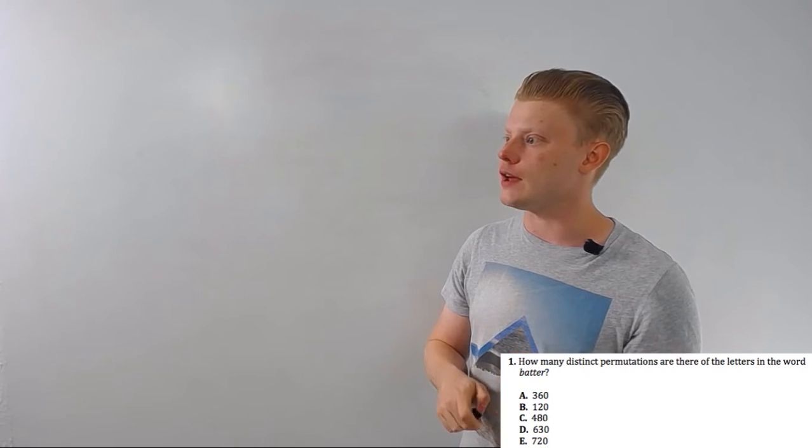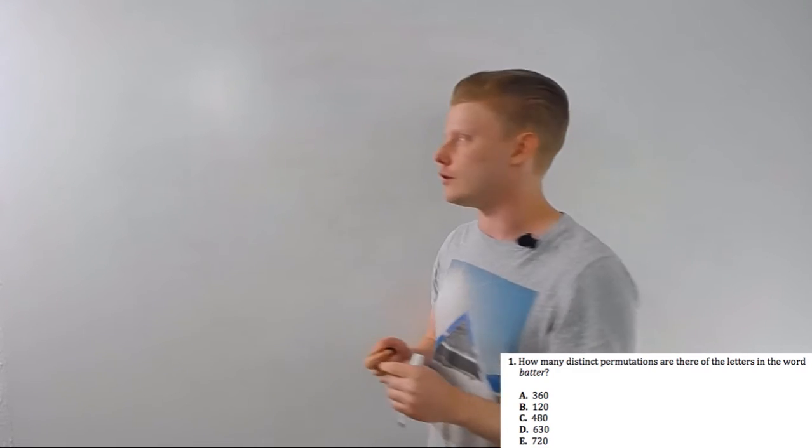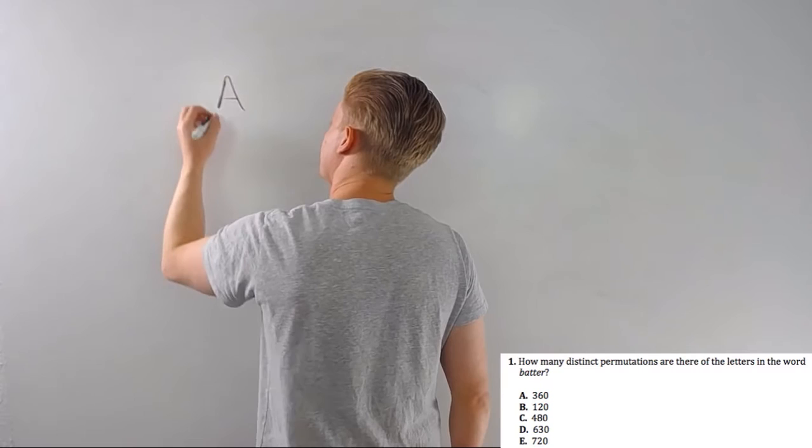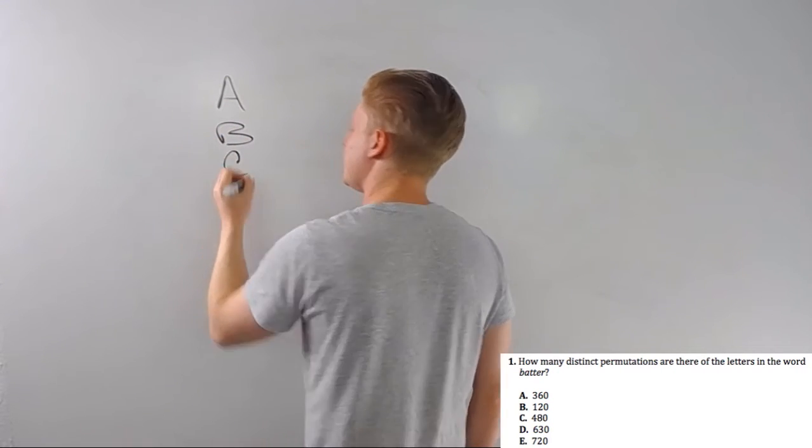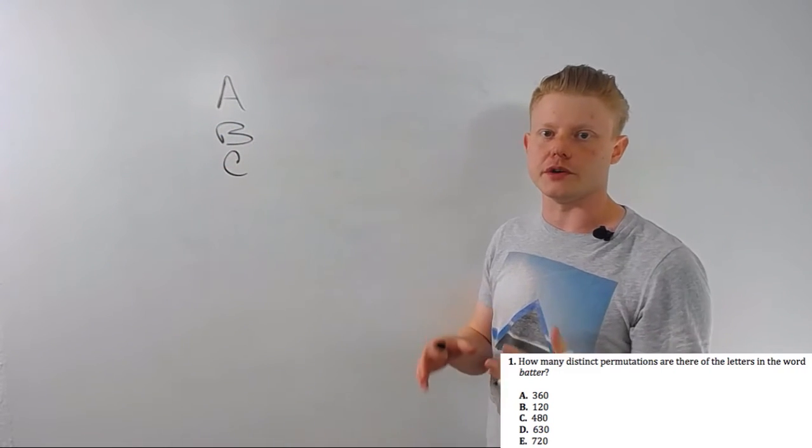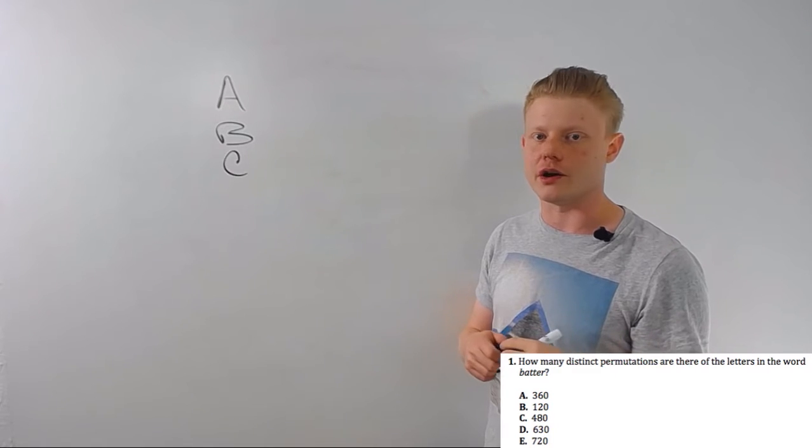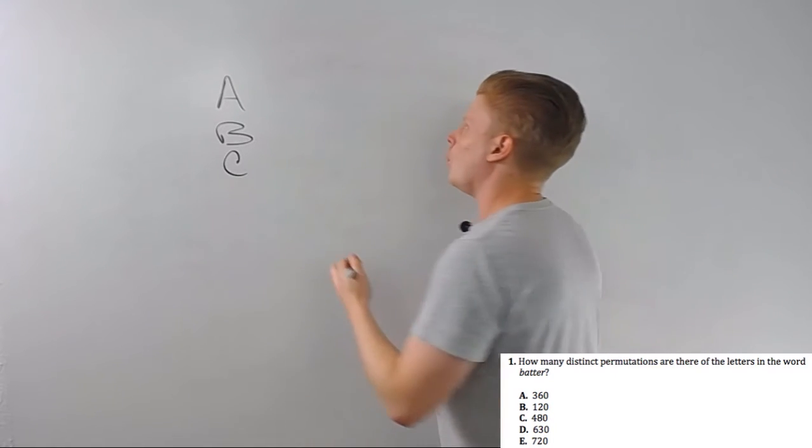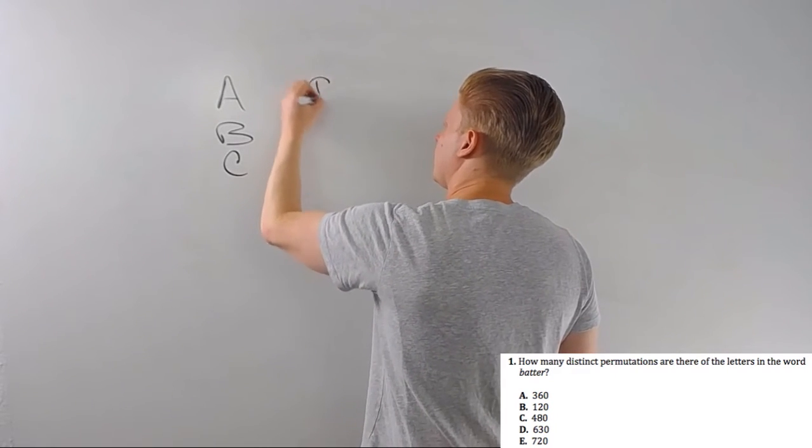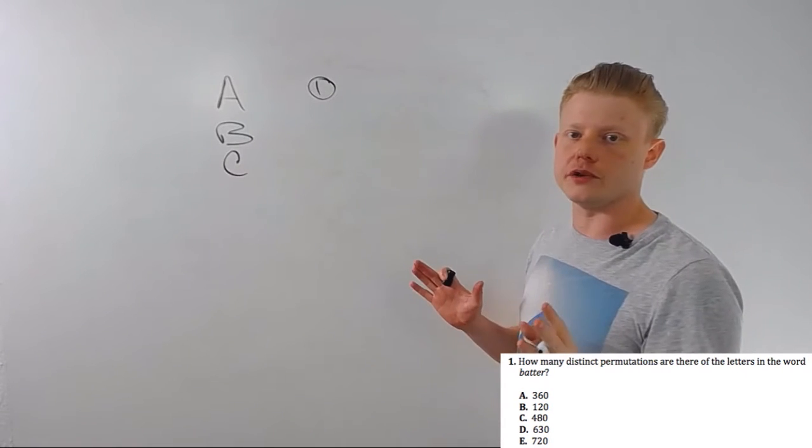So let's say that we've got a race and there are three runners, A, B, and C. And a race is a really good example for this because order obviously matters in a race. Now, when our runners are still on the track, all three of them can finish first.